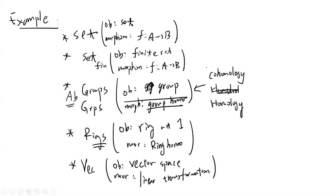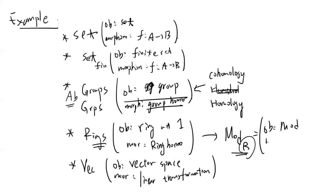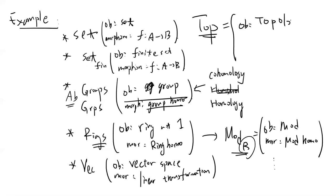You can find more examples on Wikipedia. If you learn algebraic geometry, there is R-Mod: you fix a ring R, the objects are R-modules, and the morphisms are module homomorphisms. Many others exist. The final example is Top, topological spaces: the objects are topological spaces and the morphisms are continuous maps.